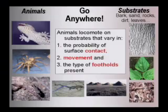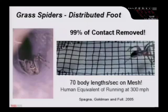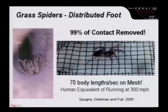It turns out that animals can go anywhere. They can locomote on substrates that vary in the probability of contact, the movement of that surface, and the type of footholds that are present. If we want to study how a foot works, we're going to have to simulate those surfaces or simulate that debris. When we did that, we put an animal — this grass spider — and had it run on a surface with 99% of the contact area removed, but it didn't even slow down the animal. It's still running at the human equivalent of 300 miles per hour.